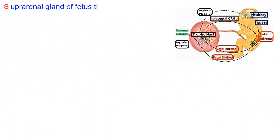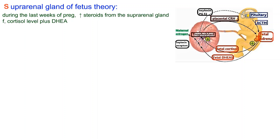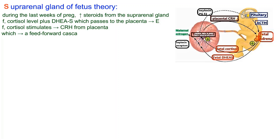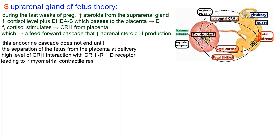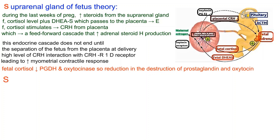S: Suprarenal gland of fetus theory — during the last weeks of pregnancy, there is an increase in fetal cortisol and dehydroepiandrosterone sulfate (DHEA-S) from the fetal suprarenal gland. DHEA-S passes to the placenta where it is converted to estrogen. Fetal cortisol stimulates corticotropin releasing hormone production, creating a feed-forward cascade enhancing adrenal steroid production until delivery. High levels of CRH interacting with CRH-R1D receptor enhance myometrial contractile response. Fetal cortisol also decreases prostaglandin dehydrogenase and oxytocinase expression, reducing destruction of prostaglandins and oxytocin.